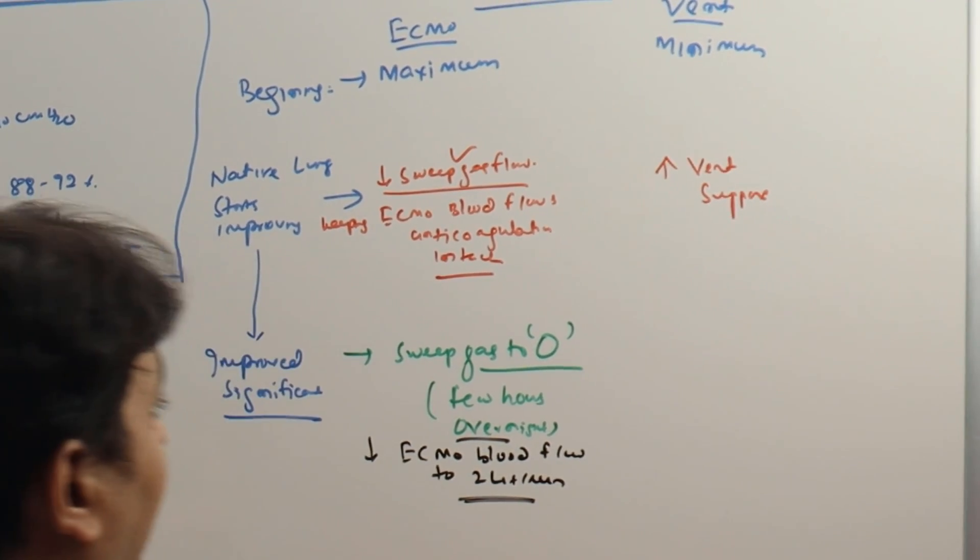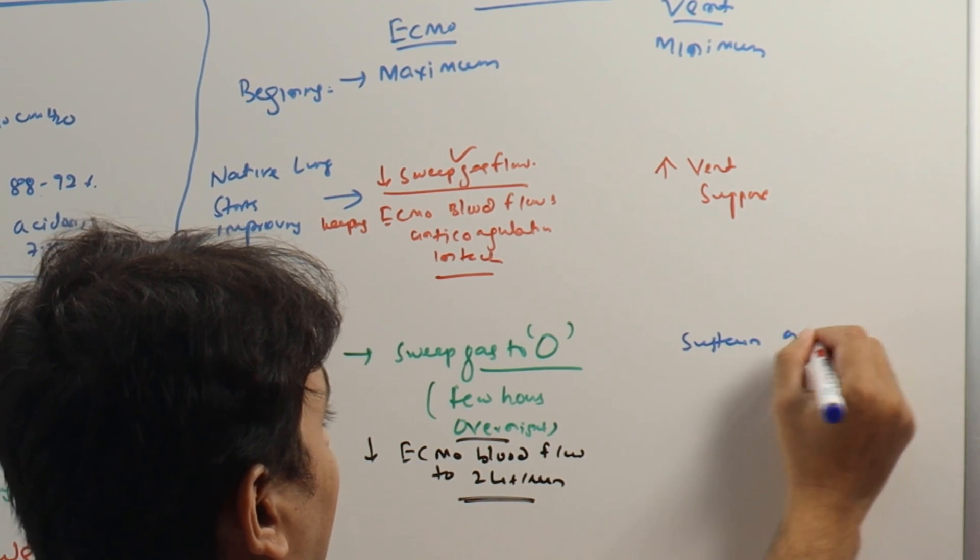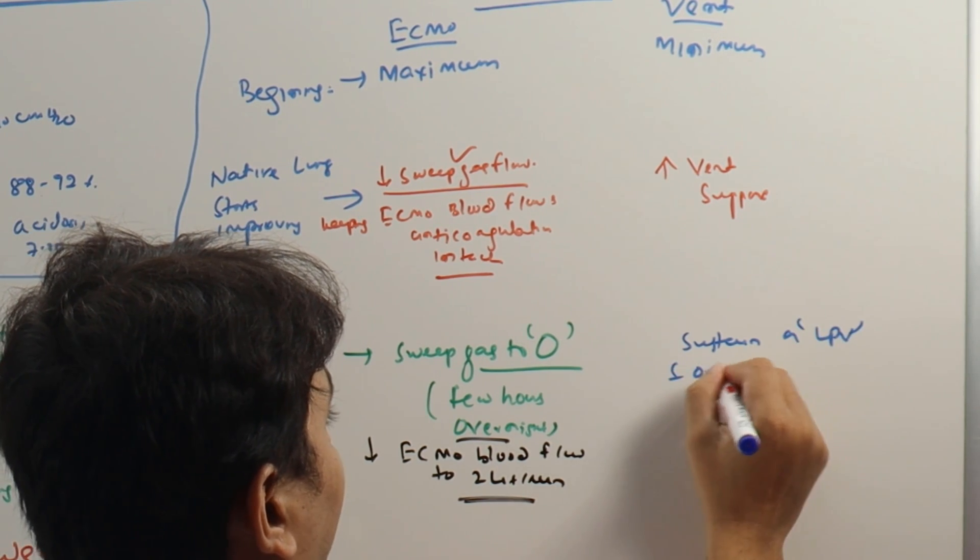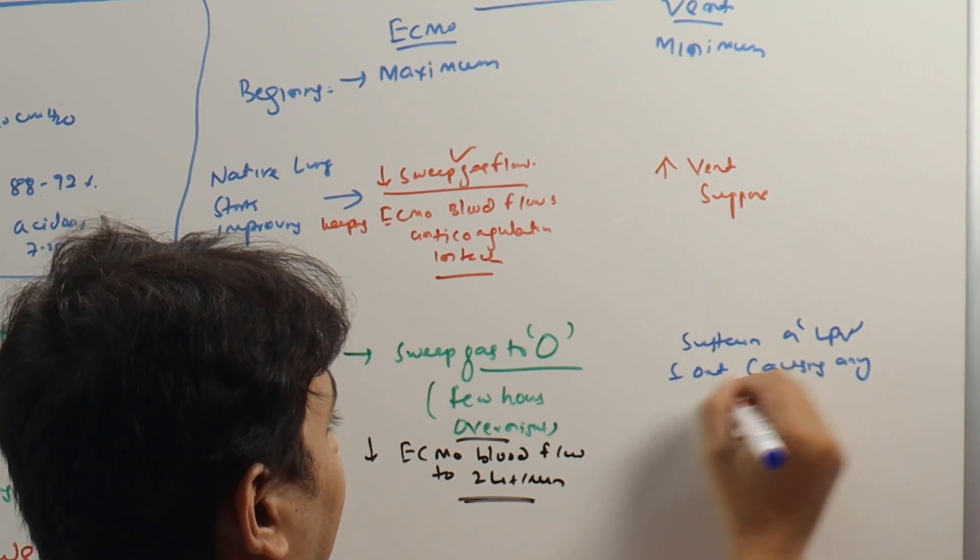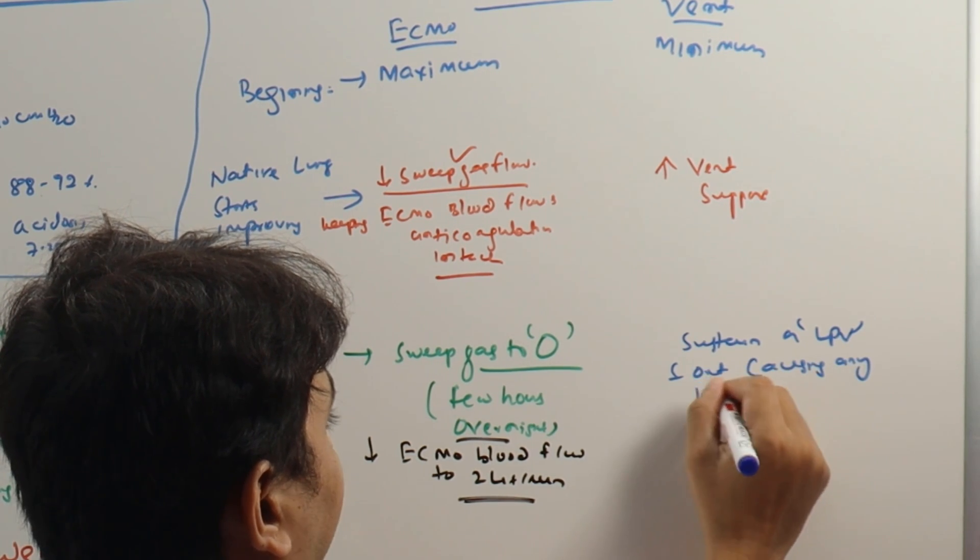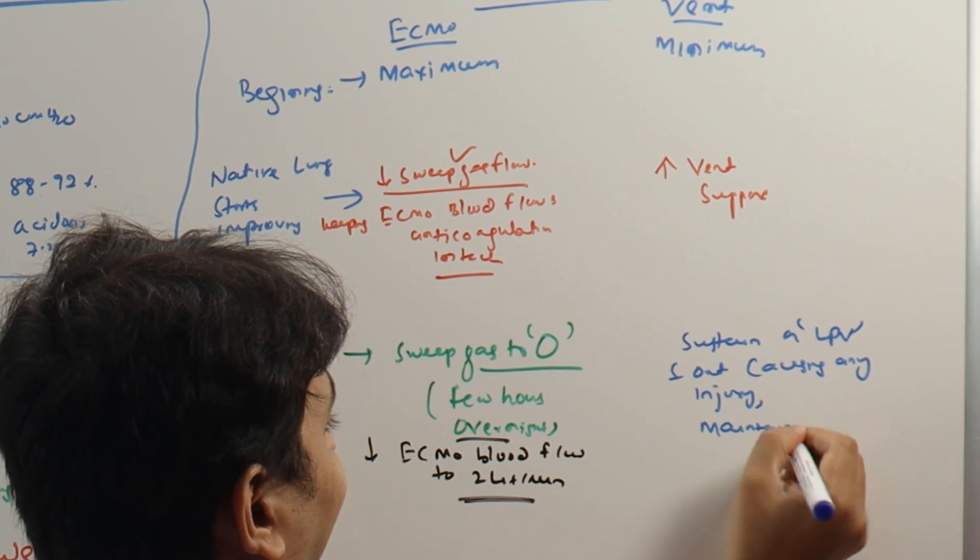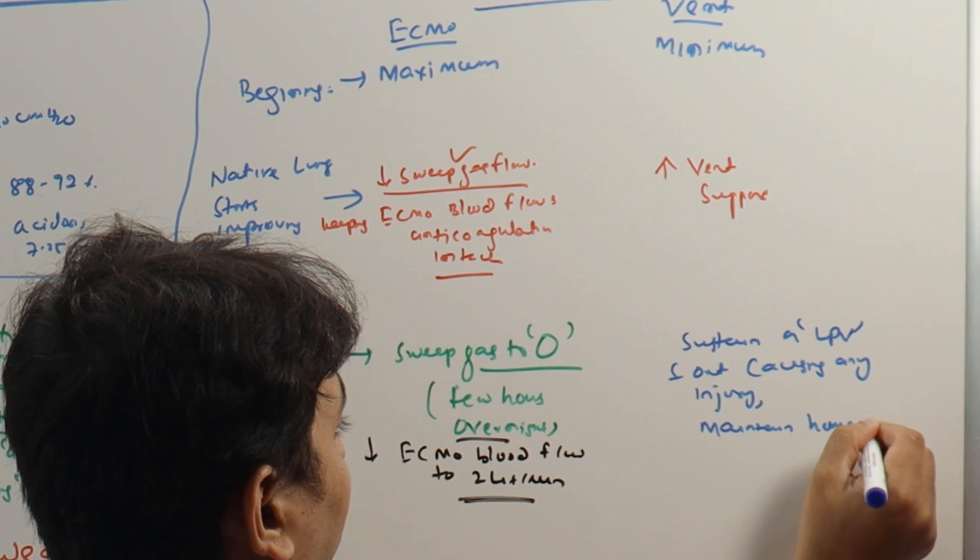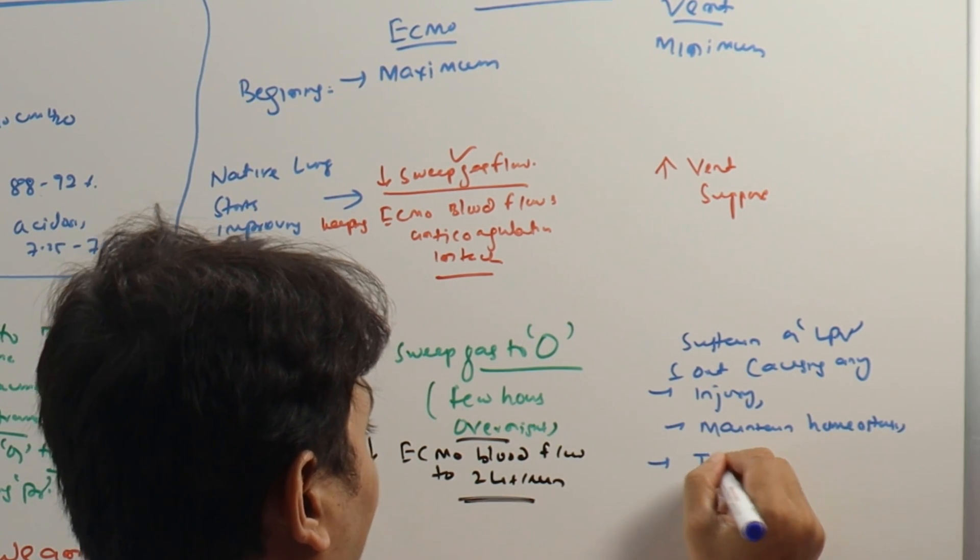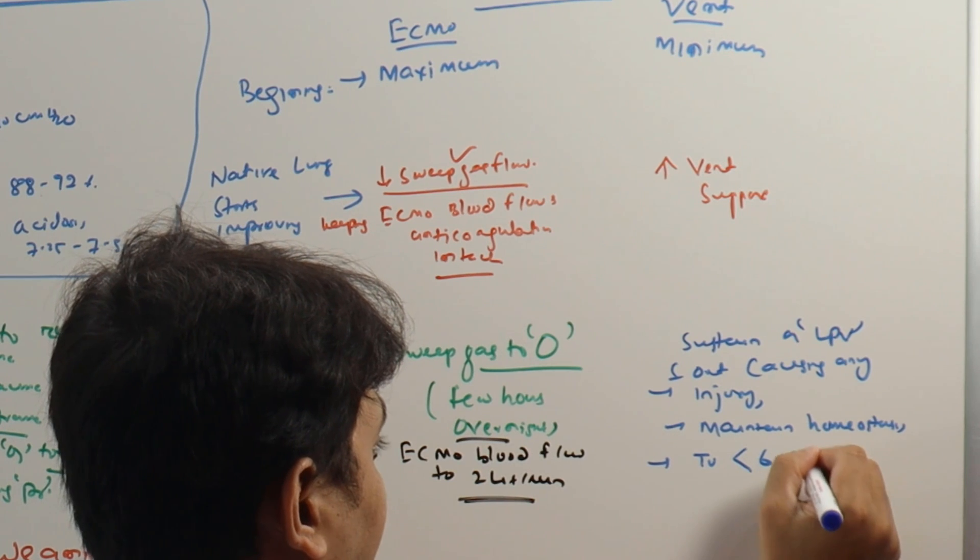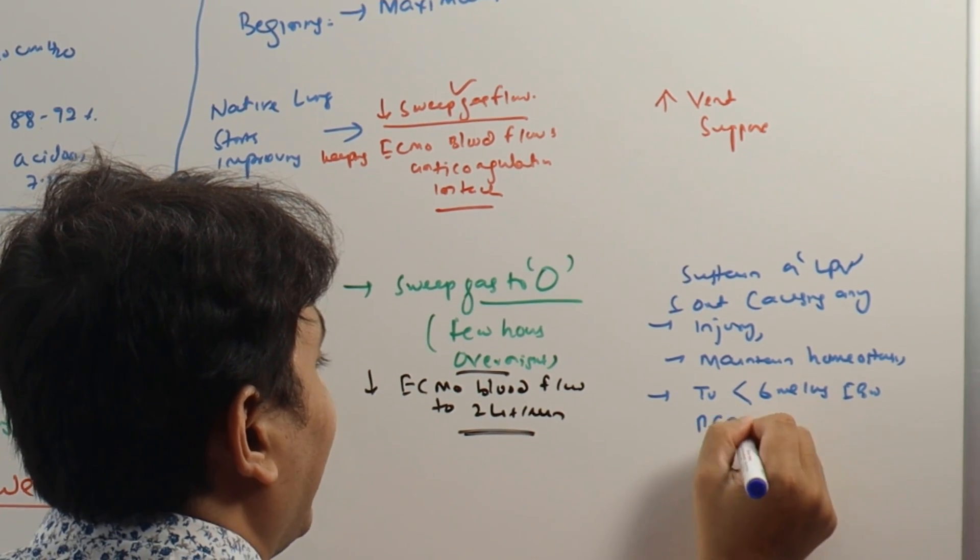Because now lung is overtaking, so you have to increase the blood flowing through the lungs. And in the ventilator part, now we can sustain a lung protective ventilation without causing any injury to the lung. At the same time we can maintain homeostasis using lung protective ventilation, that means by using tidal volume less than 6 ml per kg of ideal body weight, by using a PEEP of less than 12.